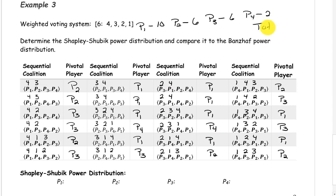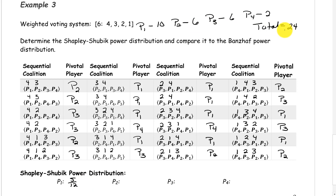We also need our total. 10 plus 6 plus 6 plus 2 gives us a total of 24. Now we make up our fractions. P1 was pivotal 10 times out of 24, so that's 10/24, which reduces to 5/12. Player 2 was pivotal 6 out of 24 times, so that's 6/24, which reduces to 1/4. Player 3 was also pivotal 6 times, so that's also 1/4. And lastly, player 4 was pivotal 2 out of 24, which reduces to 1/12.